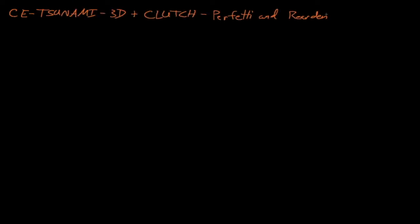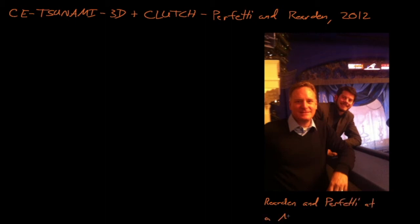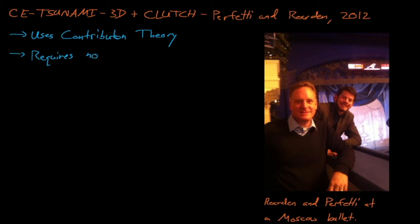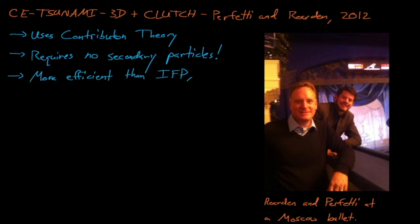The Oak Ridge Tsunami code also moved into the continuous energy realm in 2012, when a very smart and very handsome graduate student from Michigan, by the name of Perfetti, developed the Clutch method. We'll discuss Clutch in more detail in a few minutes, but the short story is that it provided a new take on Contributon theory that allowed codes to estimate the importance of events without simulating any secondary particles. This new approach provided a vast runtime improvement over the original Contributon theory approach, which could require simulating more than 300 secondary particles for each regular particle. Clutch also provided some significant runtime and memory improvements compared to the Iterated Fission Probability, or IFP, method. The downside to Clutch is that it's slightly more difficult to use than the other methods.